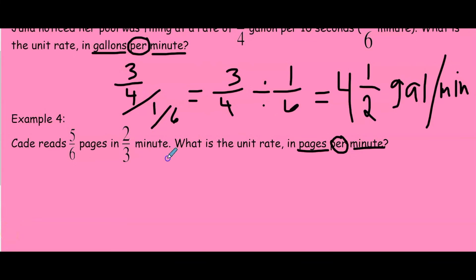So since pages comes first, we have five-sixths over two-thirds, our minutes. And then we divide five-sixths divided by two-thirds.